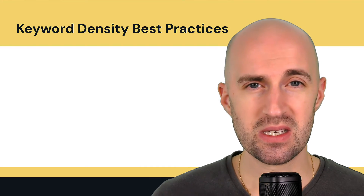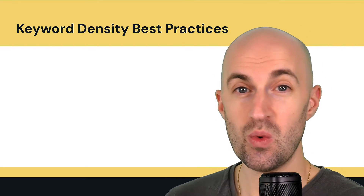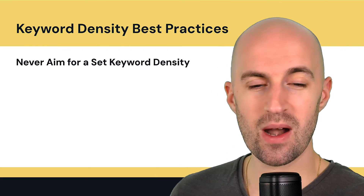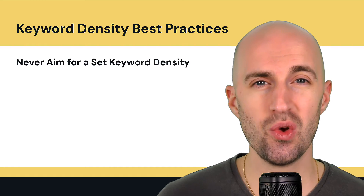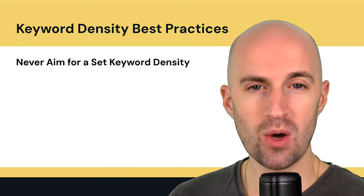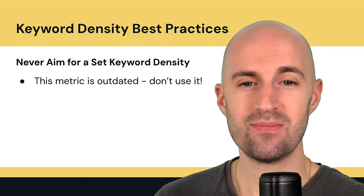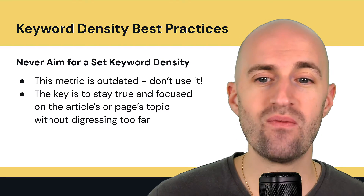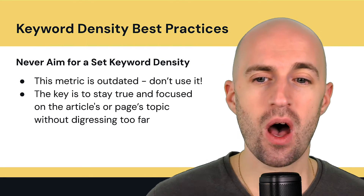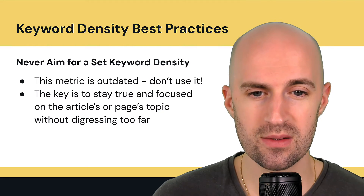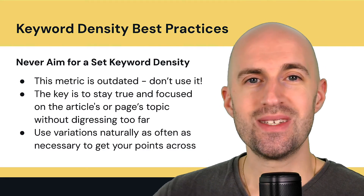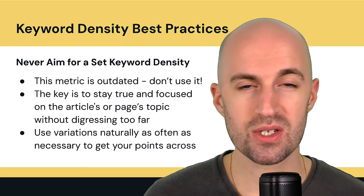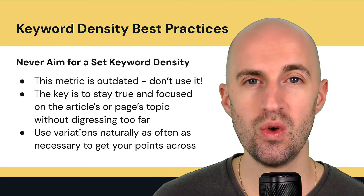Keyword density best practices — what to do and what not to do. Never aim for a set keyword density, because it's not being used anymore and it can lead you to try to reach that score artificially. This metric is outdated — just don't use it. The key is to stay true and focused on the article's or page's topic without digressing too far. Use keyword variations naturally as often as necessary to get your points across, and if there are sub-points within that topic, include those sub-keywords.